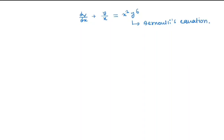We have already discussed how to solve Bernoulli's equation in my previous video — I will give the link in the description box. First, we will divide this equation by y to the power 6, so we get y to the power minus 6 dy/dx plus y to the power minus 5 divided by x is equal to x squared.